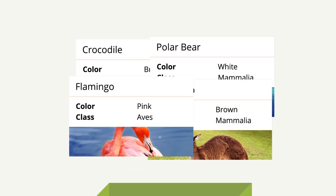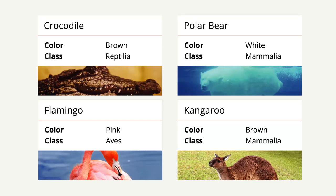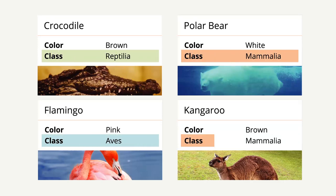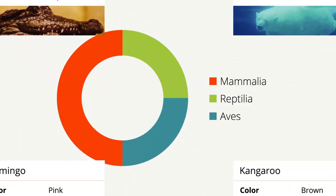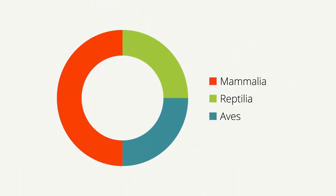Here, one label is for the biological class. This value for each data card can be unique or shared. It is the relationships between data card facts that are the building blocks of visualizations, as in this pie chart, which illustrates the distribution of biological class among the animal data cards.